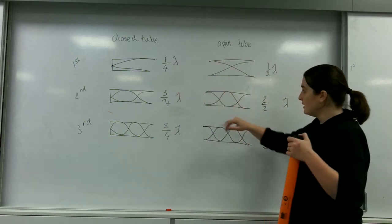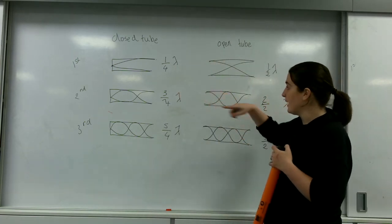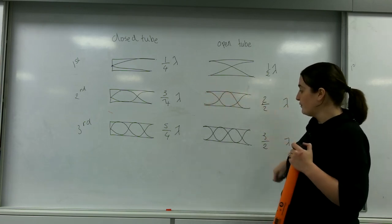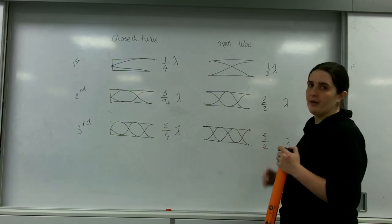As we go down, this one represents the second harmonic. Again, I need to go to the next anti-node. I get a full wavelength, and for the last one I get one and a half wavelengths.